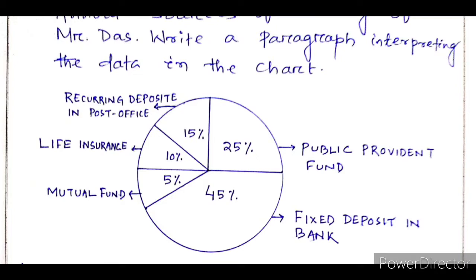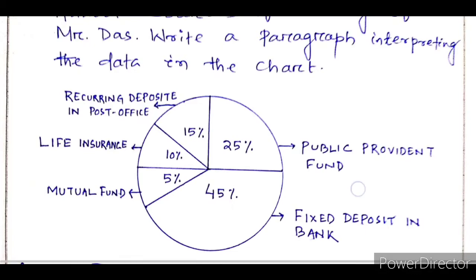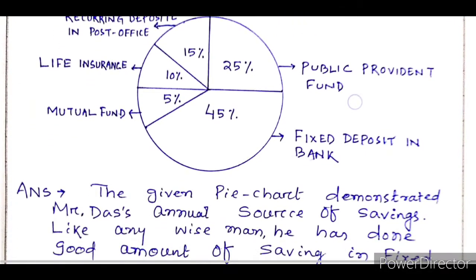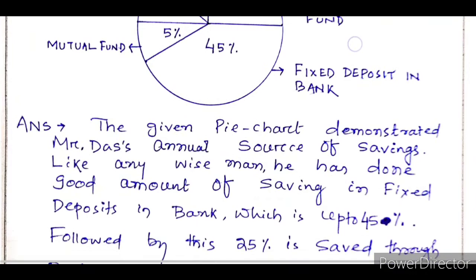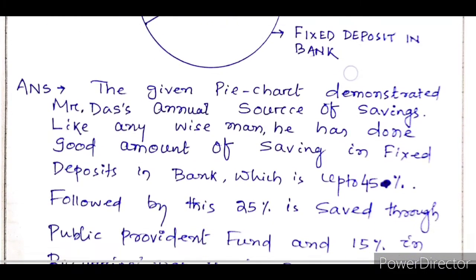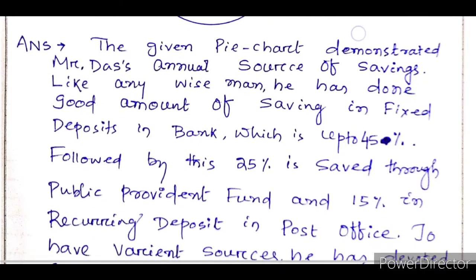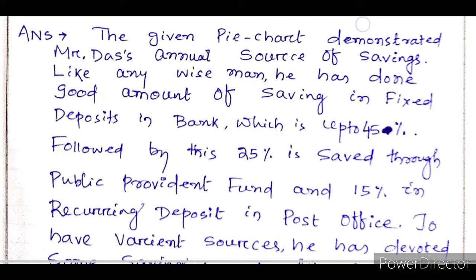So this is the question and the diagram. Now we have to convert it into answer form. The format is next — how do we present it in verbal form. The answer on your screen reads: 'The given pie chart demonstrates Mr. Das's annual sources of saving.'